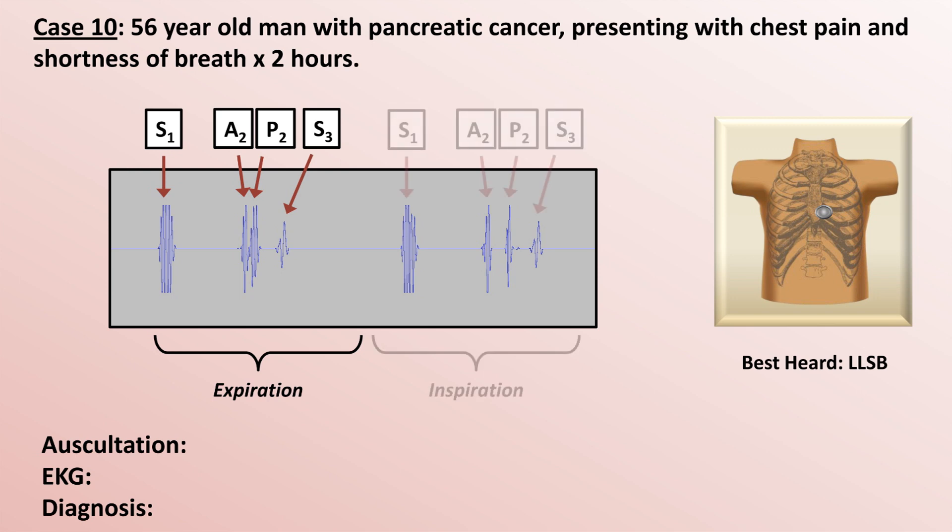Then when the patient inspires, the lower intrathoracic pressure leads to increased RV preload and decreased LV preload, which makes A2 come slightly earlier and P2 slightly later. So the S2, which was already abnormally split during expiration, becomes even more so during inspiration. The term used to describe this pattern is a wide S2, or widely split S2.